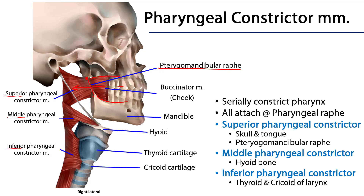The middle pharyngeal constrictor muscle attaches to the hyoid bone, and the superior pharyngeal constrictor muscle nestles within it. Both of these come together along the midline raphe, and the middle nestles within the inferior pharyngeal constrictor muscle, which originates from the larynx — specifically attaching to both the thyroid cartilage and the cricoid cartilage. All of these muscles work to serially constrict the pharynx from top to bottom, and all are innervated by the pharyngeal plexus.